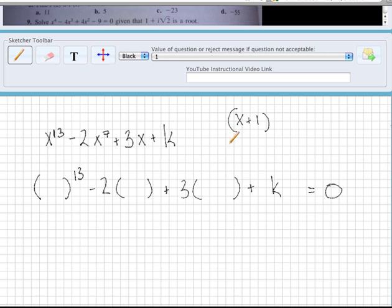So the number that makes this factor 0 is negative 1. Let's plug in negative 1 to our polynomial.